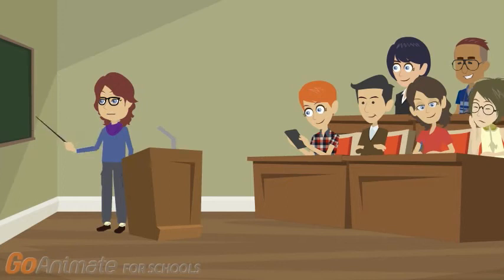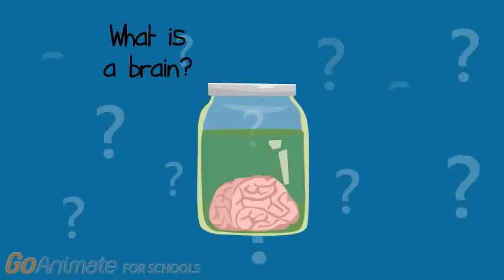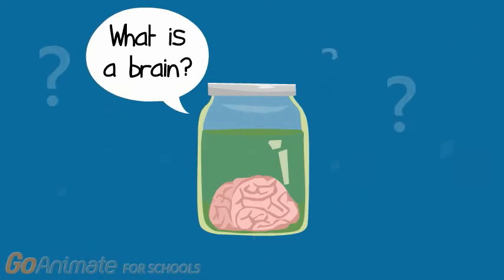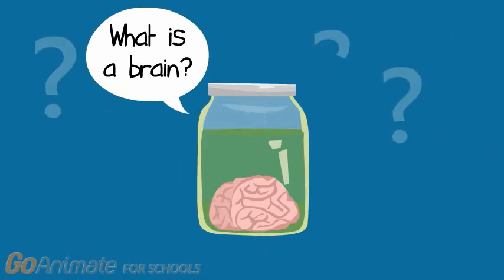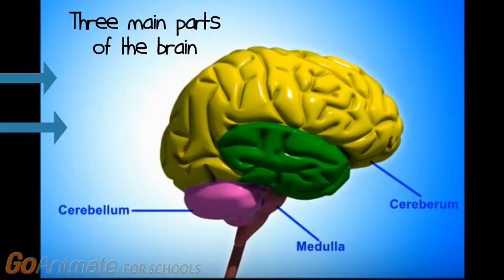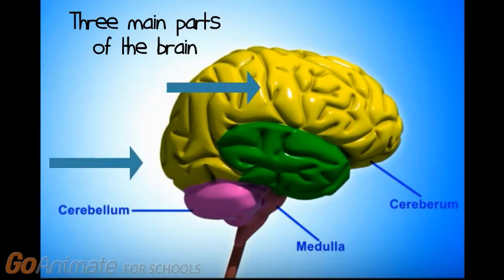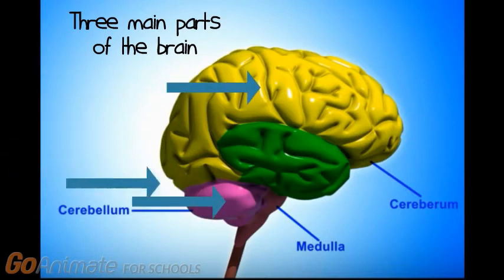Okay class, time to use our brains. What is a brain? There are three main parts of the brain: the cerebrum, the cerebellum, and the medulla, also known as the brainstem.